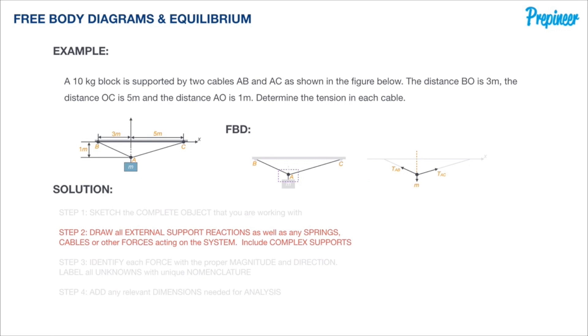We want to pull that out of the actual diagram to start creating a new free body diagram through just that single particle. Identifying the forces, we have tension in cable AB, tension in cable AC, as well as a mass acting downward from point A.